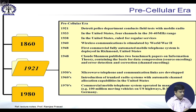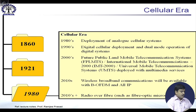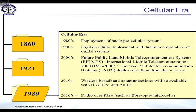Moving on to the next phase, beyond the 1980s, which started with the deployment of analog cellular communication systems. These were followed by digital cellular communication systems, then future public land mobile telecommunication systems, and finally IMT 2000, which led further in 2010 to the adoption of IMT Advanced using OFDM. Beyond 2010, we are seeing deployments of 4G systems as well as active work going on for 5G systems.